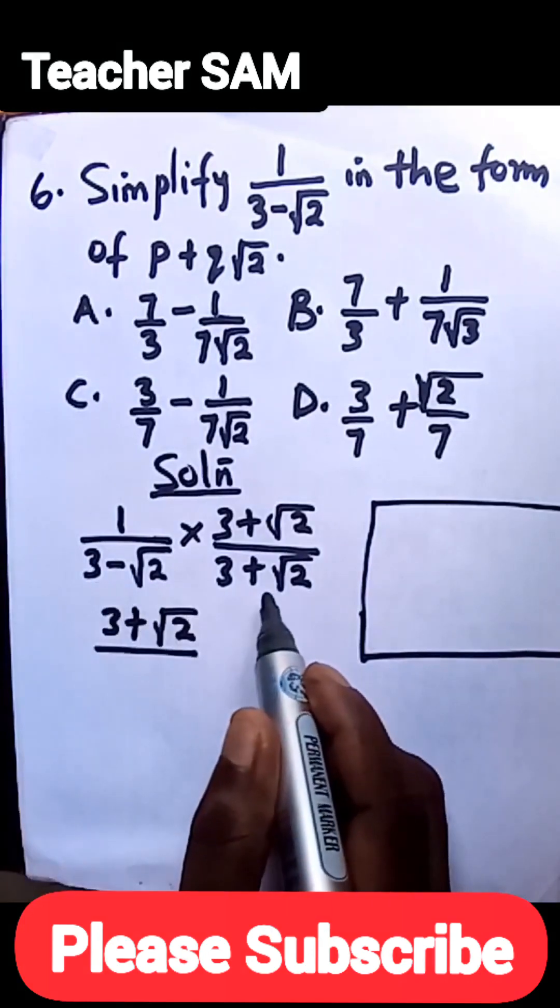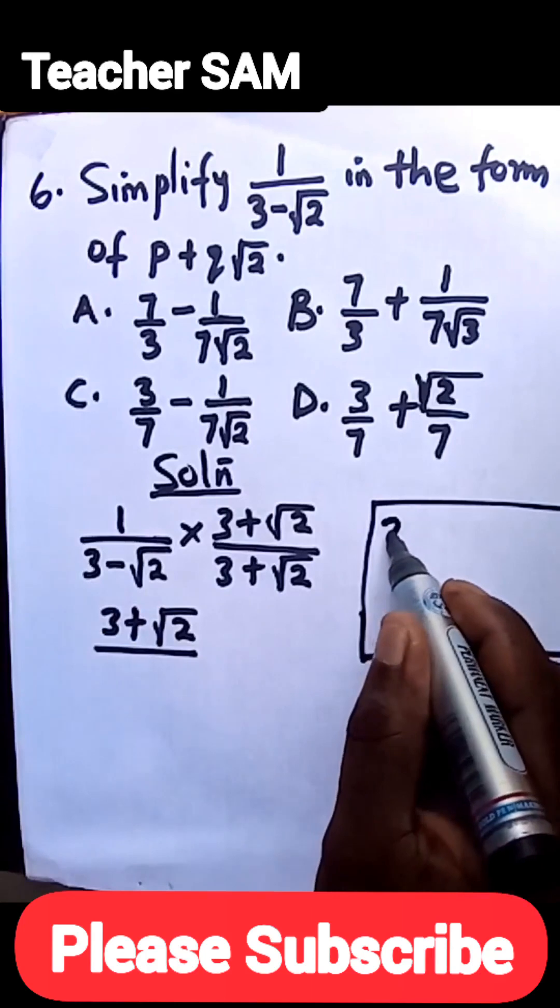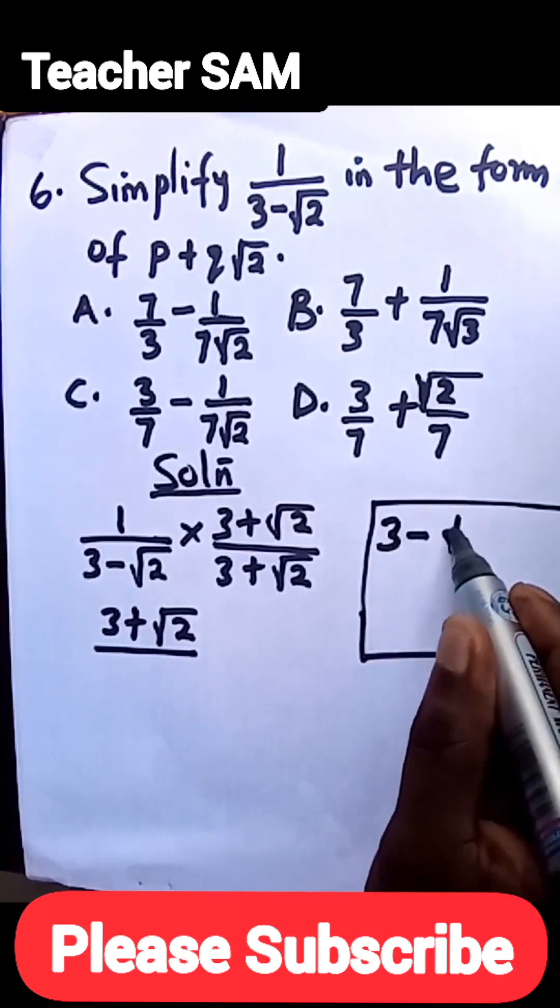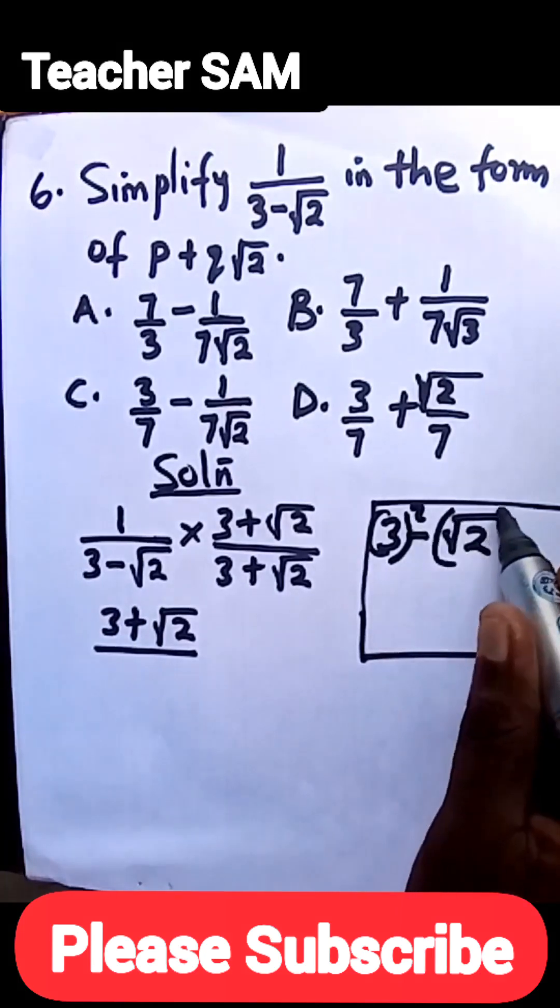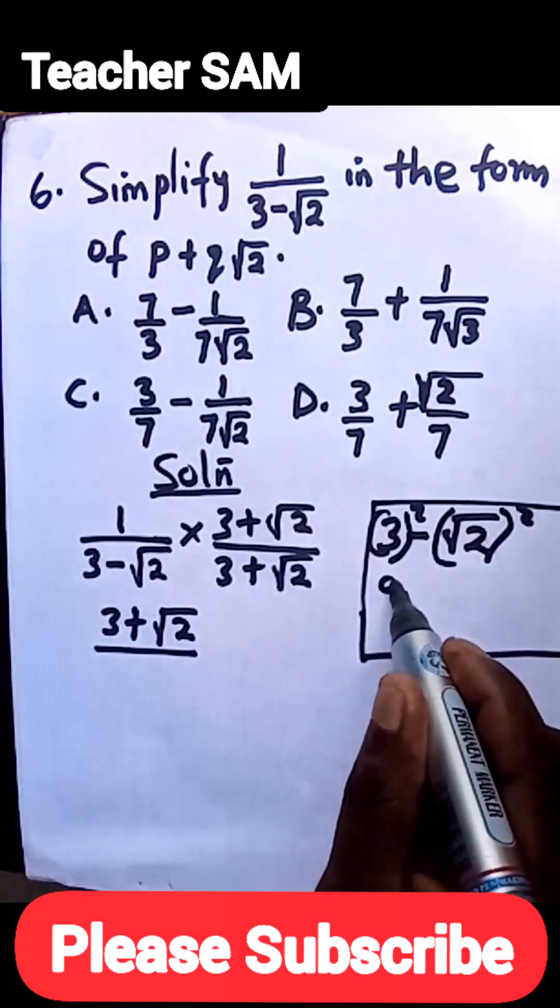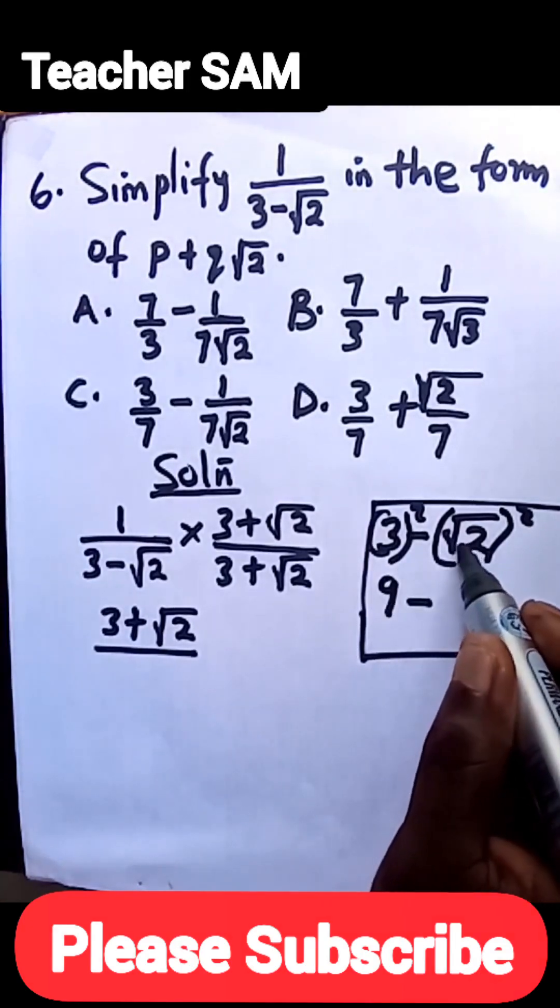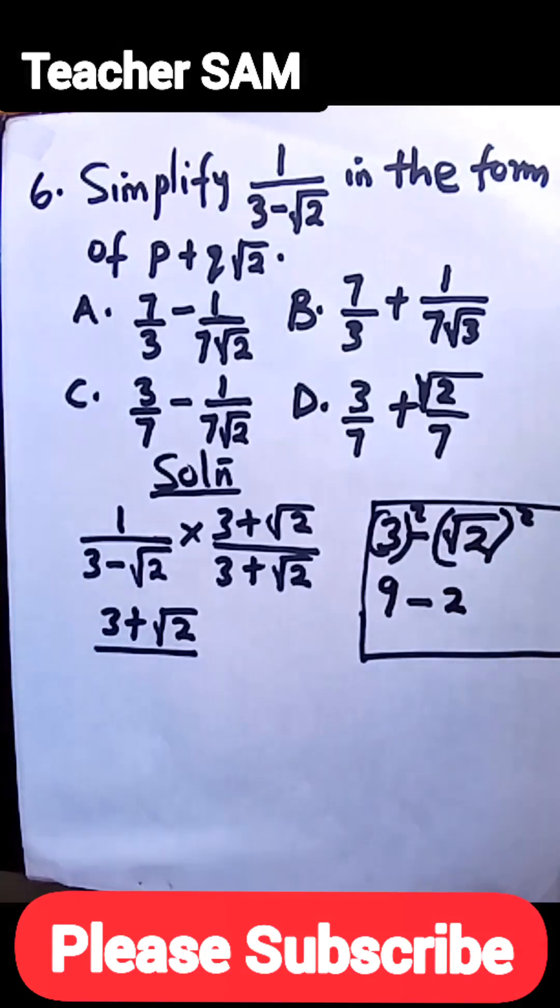Since this and this are the same, just the difference of their sign, take the one with the negative, that is 3 and √2, and square both of them. So the square of 3 is 9, minus the square of √2 is 2. You know that √2 times √2 is 2.